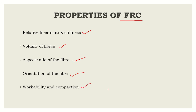The fifth property is workability and compaction. When fibers are included in the concrete matrix, workability is obviously reduced, which affects the compaction process — prolonged vibration has little impact. This mainly depends on fiber length and diameter. Poor orientation, improper mixing, and inadequate dispersion of fibers reduce workability. To solve this, you can use a water-reducing admixture, a plasticizer, or a superplasticizer to enhance workability.